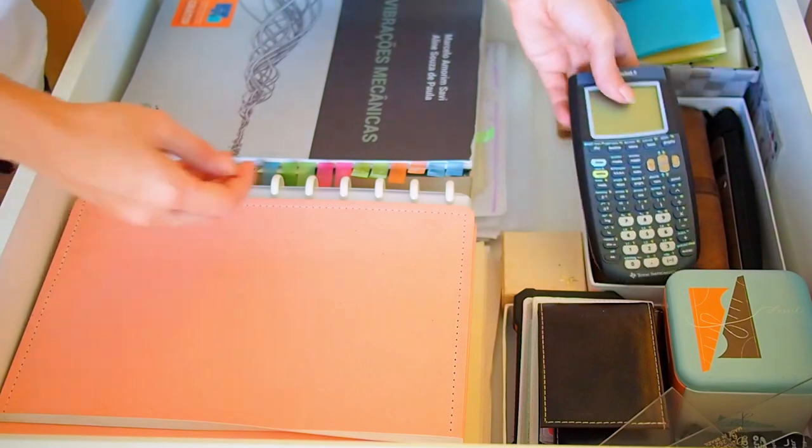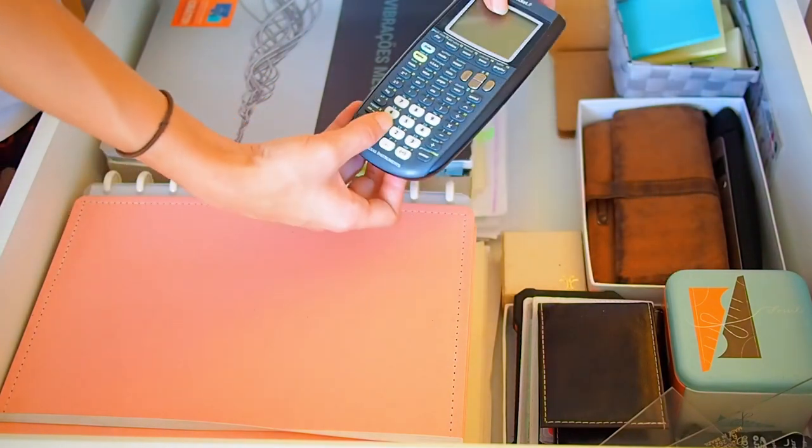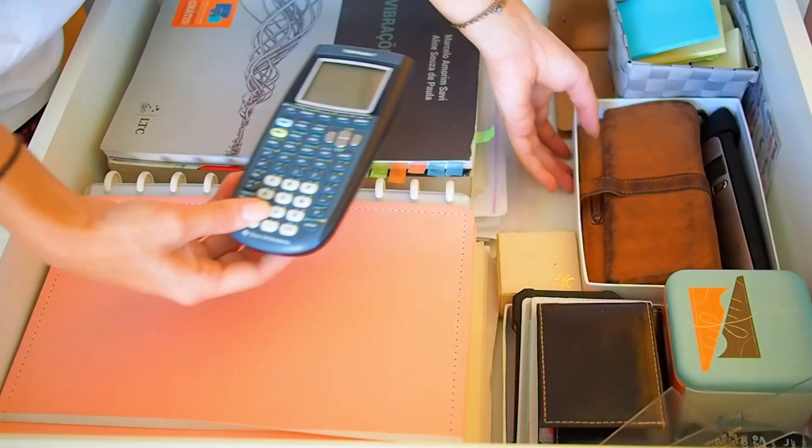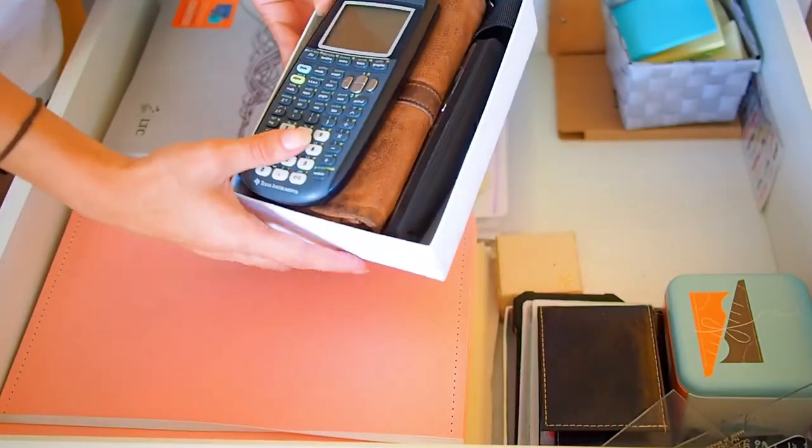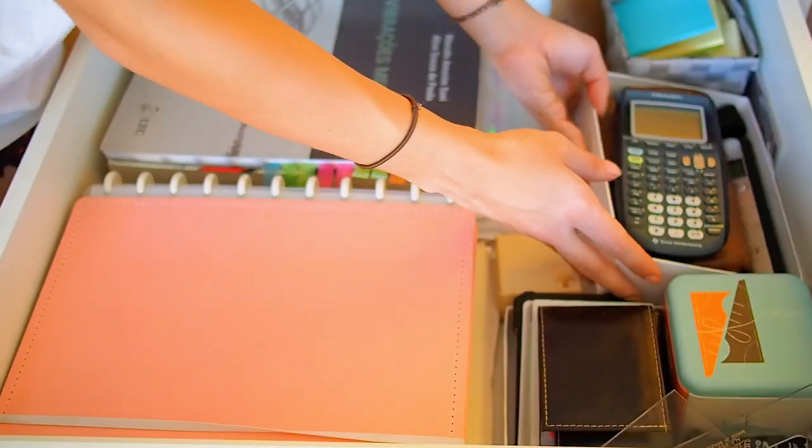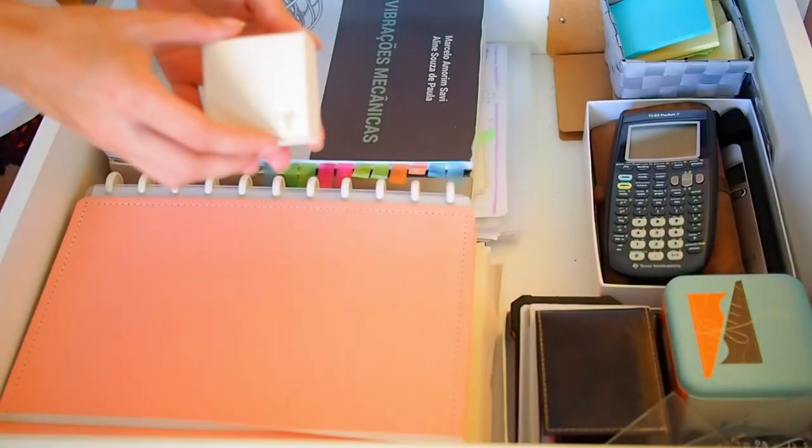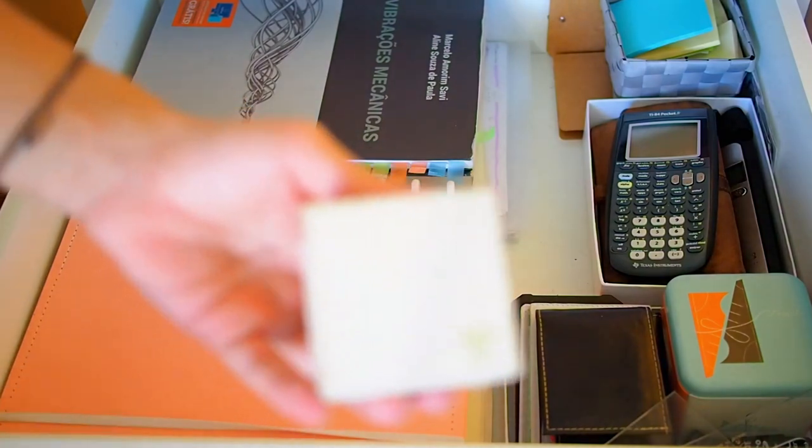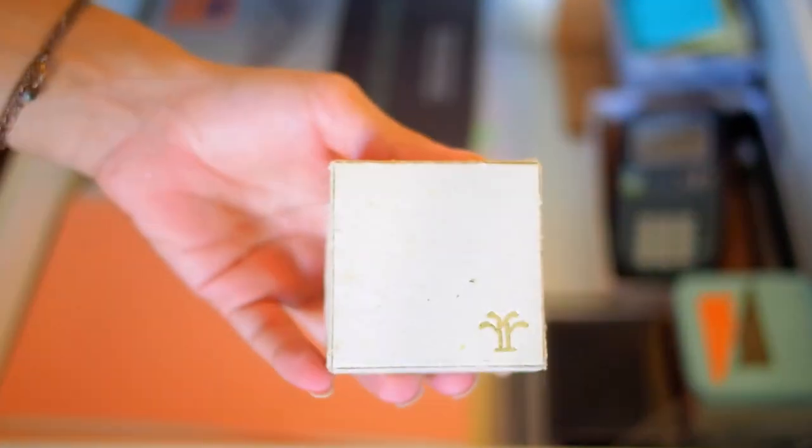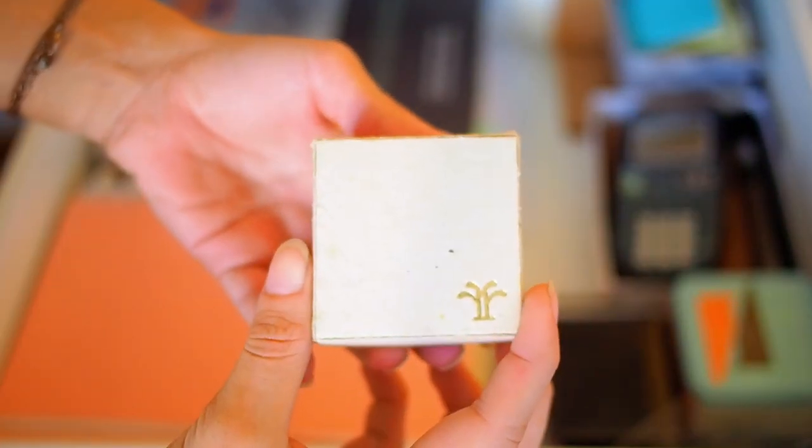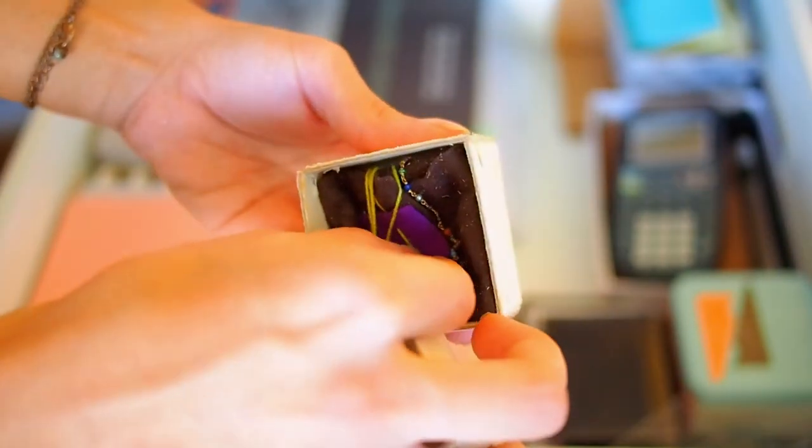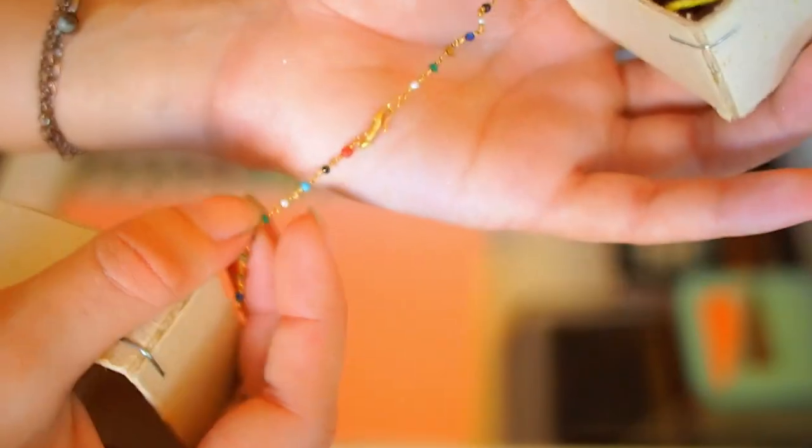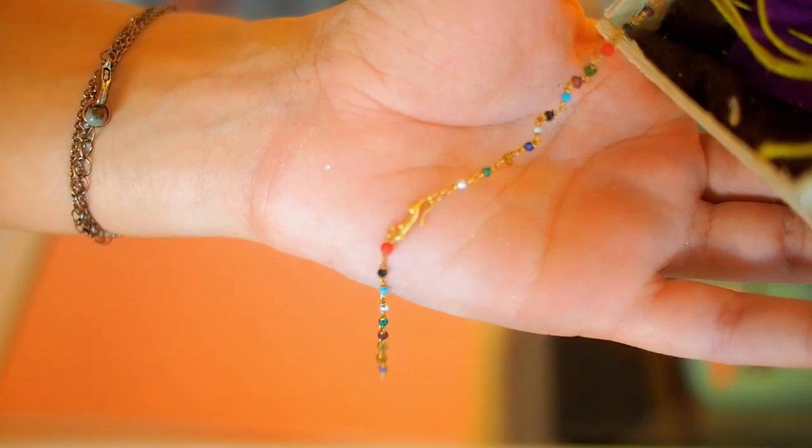Over here I have some things I use daily which is like my calculator, my wallet, and I separated everything into these little boxes because it's more organized and just keeps everything in its place. Over here I also have a little box for very precious jewelry I have that I don't wear because I feel like I'm gonna lose it. But I keep it close in the first drawer because I think it's so cute.